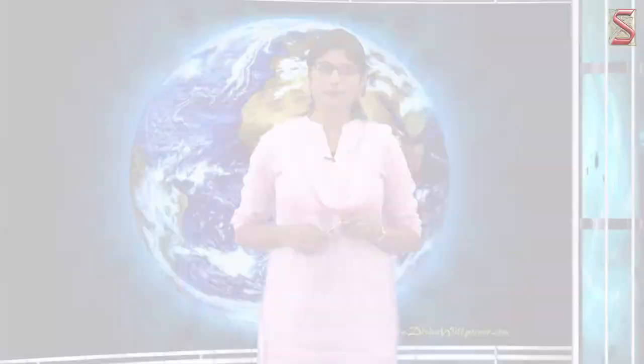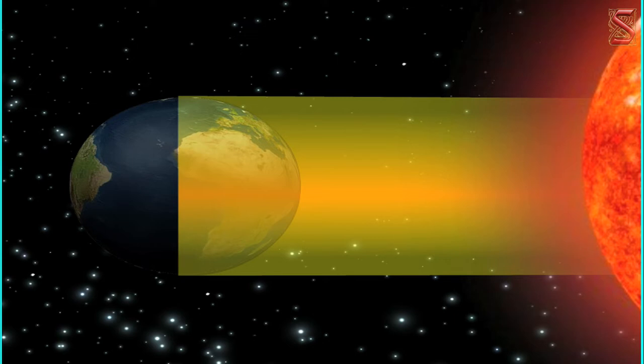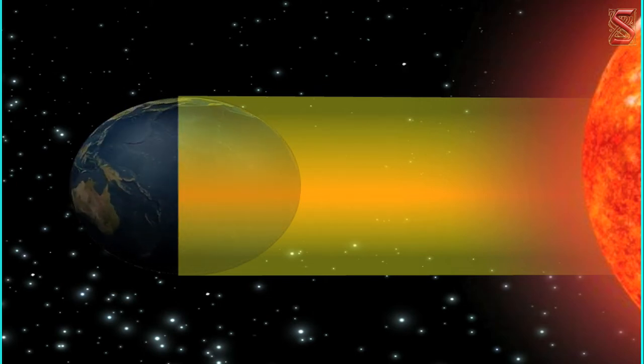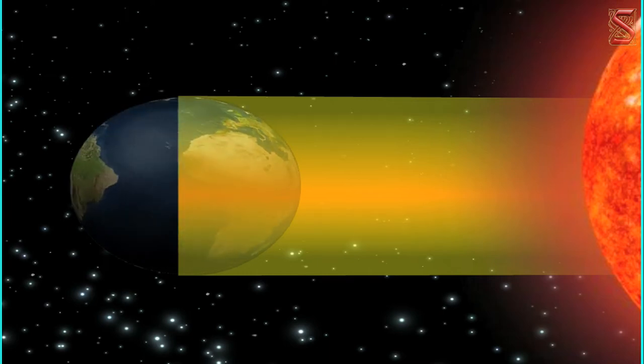Students, suppose the earth did not rotate on its own axis. If the earth did not rotate on its own axis, it would simply mean one half exposed to the sun and the other half continuously in darkness. This would make life impossible on the earth, with extreme heat on one half and extreme cold on the other. Hence, it is the rotation of the earth that facilitates the distribution of heat and light.